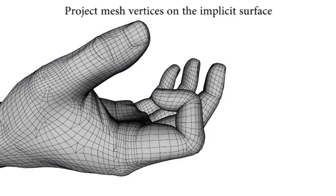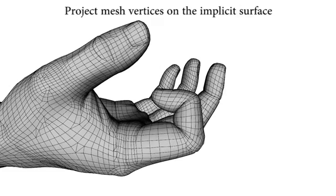The dual quaternion solution is corrected by projecting the mesh vertices on the deformed isosurface following the field function gradients. Contact is performed in the folds.